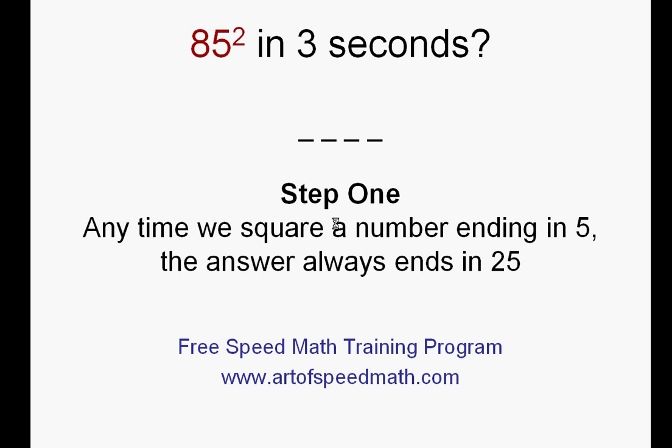Let's just get right to it — 85 squared in three seconds. The four blanks on the page are representative of where our answer is going to go, and we'll start with step one. The first thing is that any time we square a number ending in five, the answer will always end in 25.